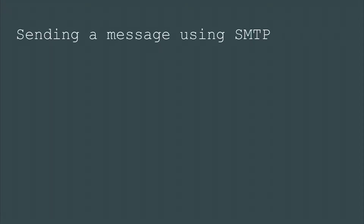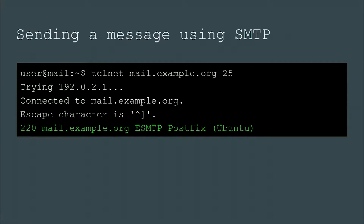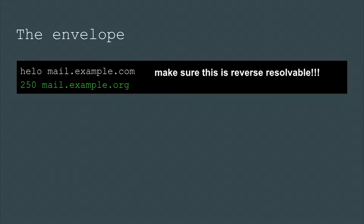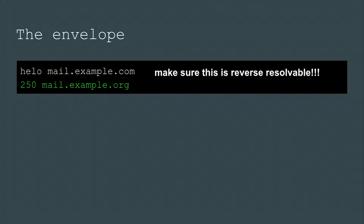Let's take a look at actually sending a message. We can do this on the command line very easily using Telnet. We connect to a mail server on port 25. We get greeted by the mail server — in this case mail.example.org, which is the recipient's mail server. We greet the server with a HELO command, or in later protocols EHLO, and we use our mail server name. In real life, you should make sure that your mail server is reverse-resolvable, so that if you reverse-resolve the IP address of your mail server, you get the same name as you are typing in your HELO command.